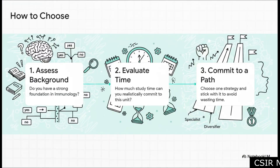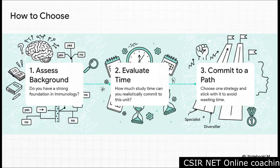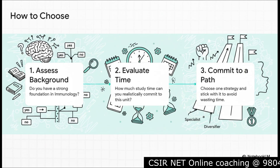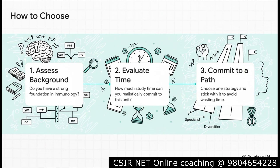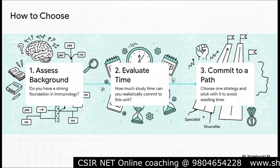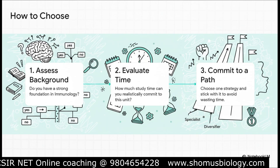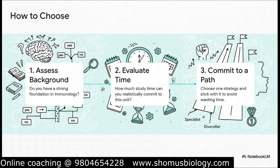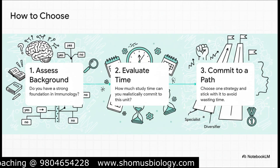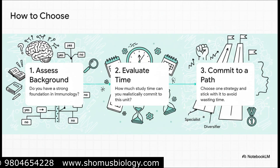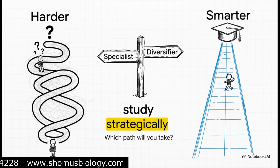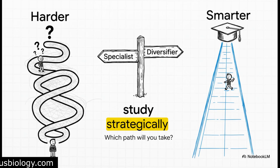The real power of this analysis isn't just about knowing what's important — it's about empowering you to make a conscious, effective choice for your own preparation. How do you make your choice? Follow these three steps. First, assess your background — be brutally honest: do you already have a solid foundation in immunology, or are you starting from scratch? Second, evaluate your time — mastering immunology is not a weekend job; it can take months. Third, and most importantly: commit. Pick a path and stick to it. The fastest way to waste time is to try doing a little of both. Success in this exam isn't about studying harder — it's about studying smarter. You now have the blueprint. Are you going to be the Specialist or the Diversifier?